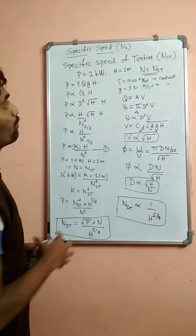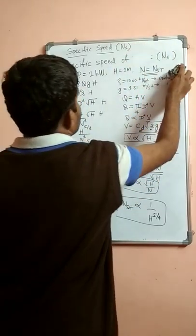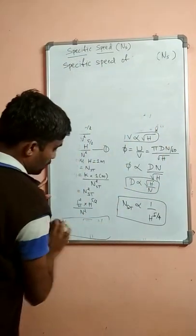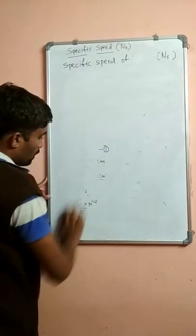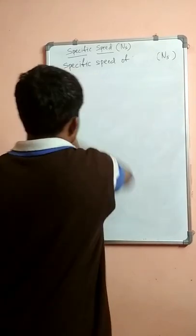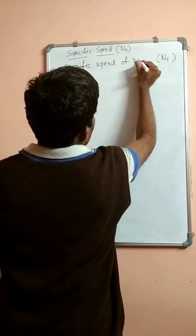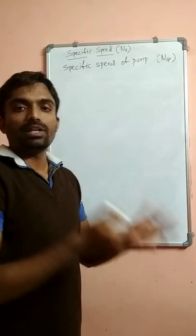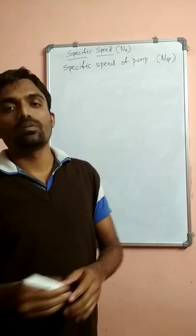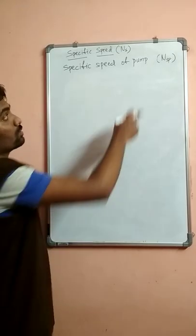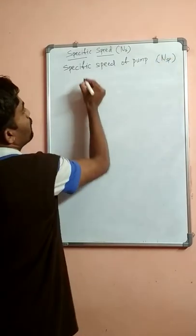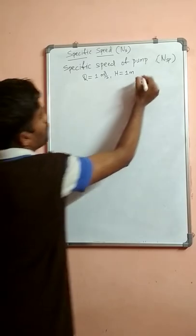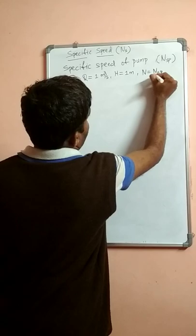Now let us discuss about Specific Speed of Pump, denoted N-S-P. We can define it similarly: it is a pump which is geometrically similar and reduced in size compared to the actual pump, which is giving 1 meter cube per second discharge at a head of 1 meter. In that case, the speed of the pump is called the Specific Speed of the pump.